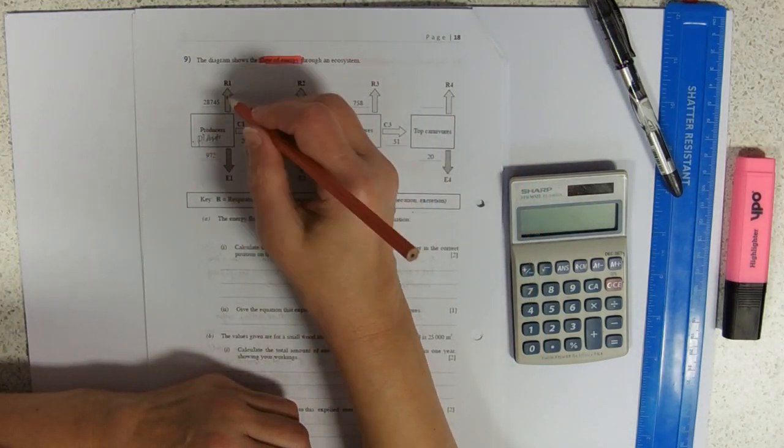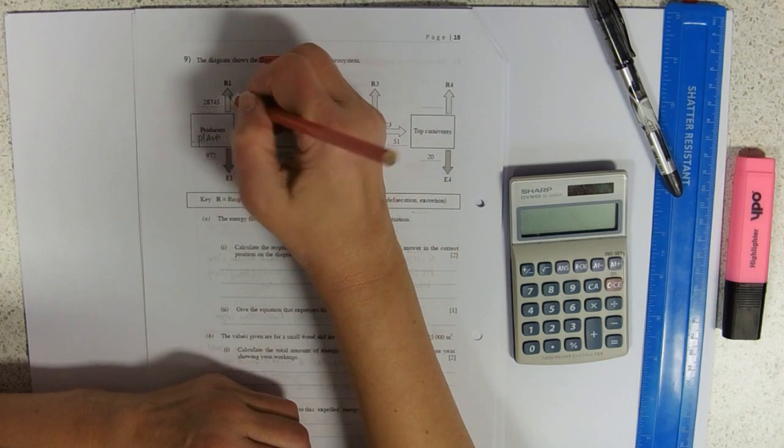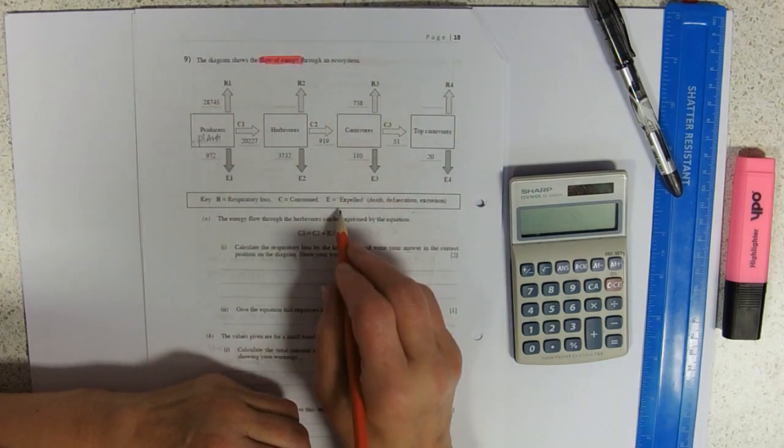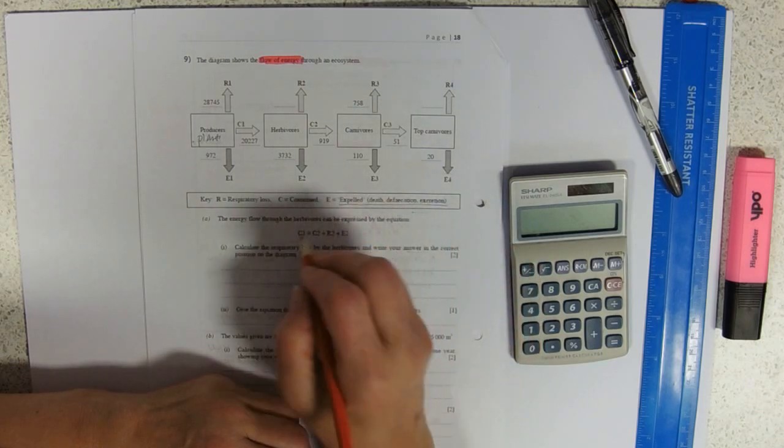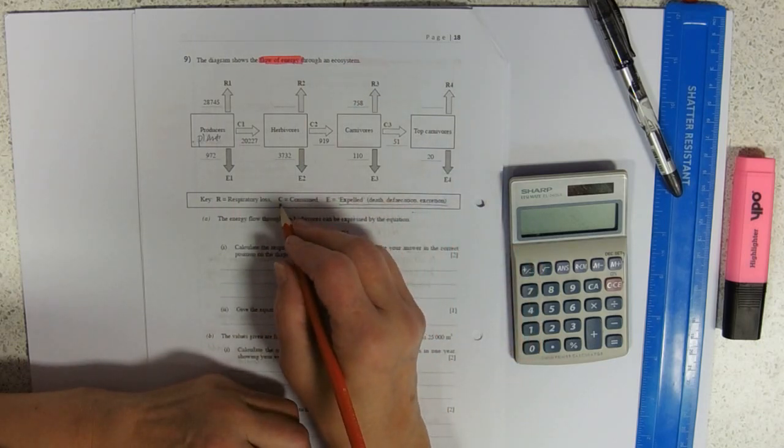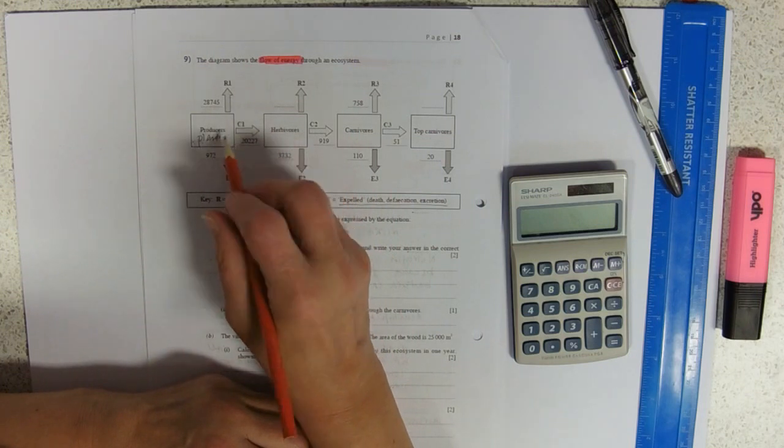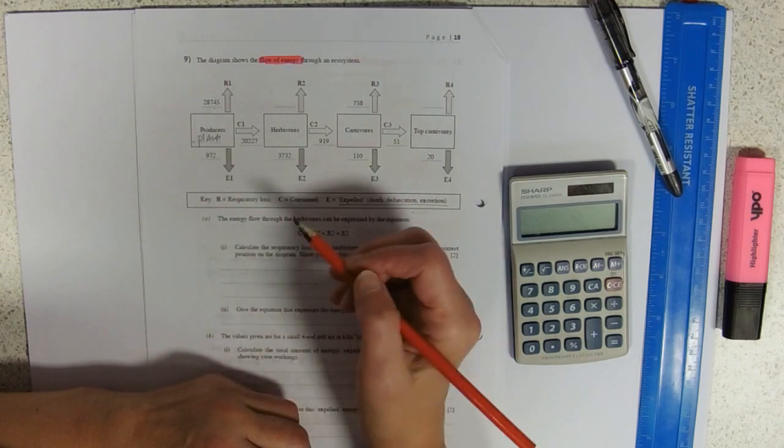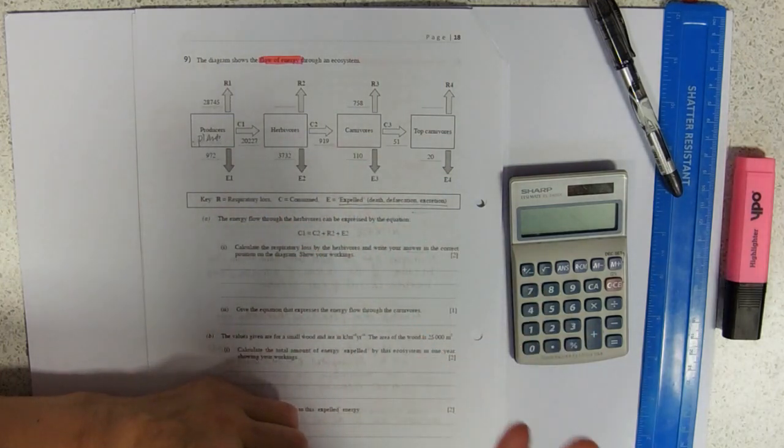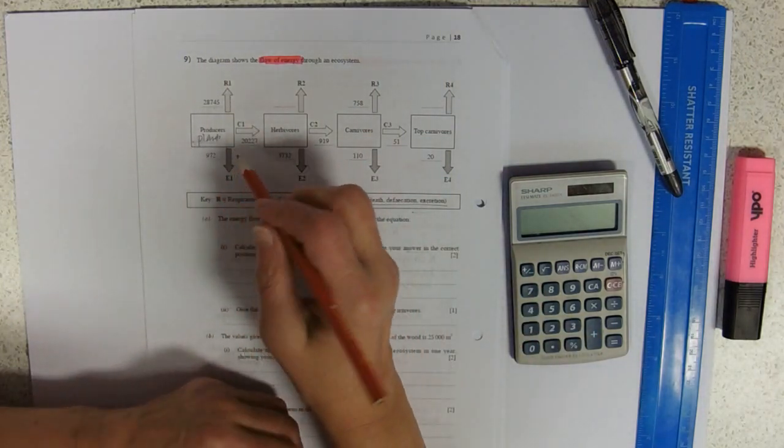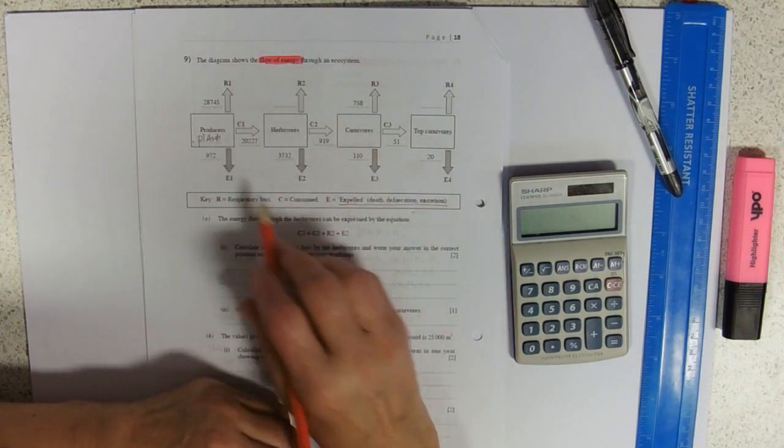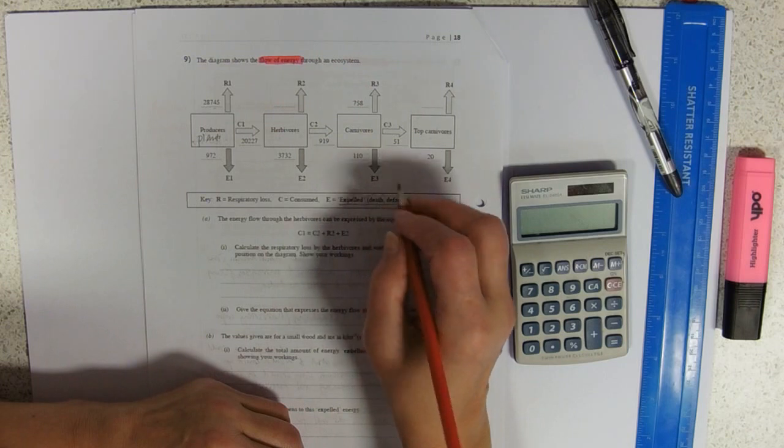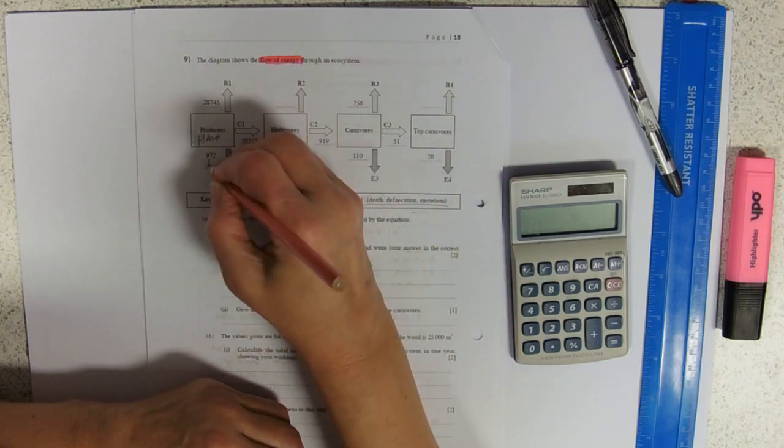And so, from the producers they're respiring 28,745 units of whatever it is—I don't know what units it's in, it doesn't say—and 972. Obviously just death from the plant there. That's just death. Excretion or defecation? Definitely not.